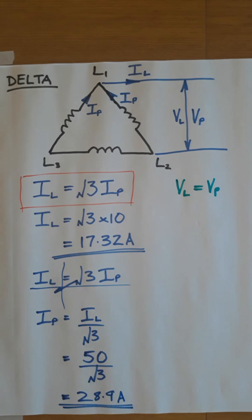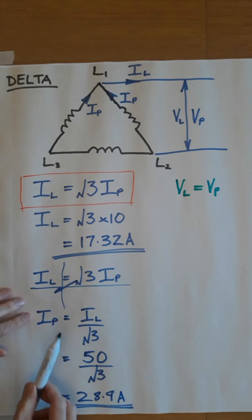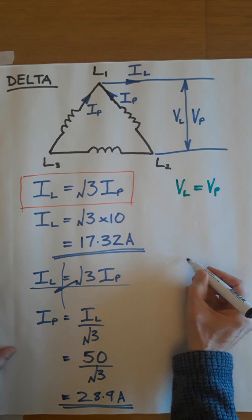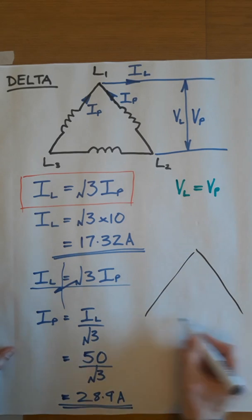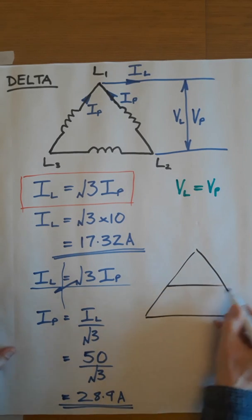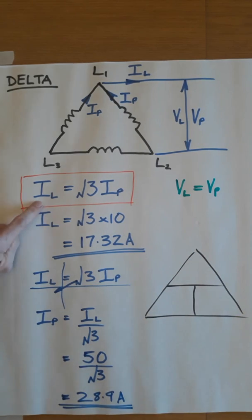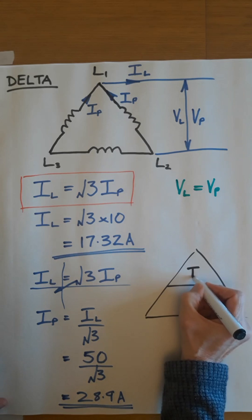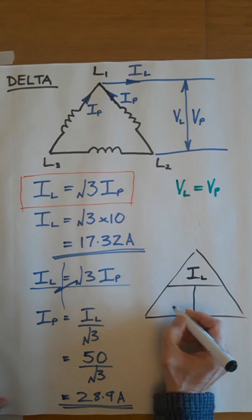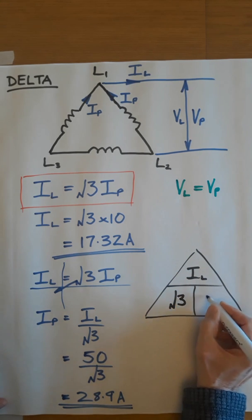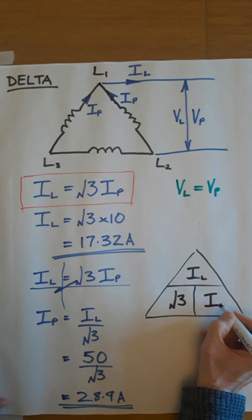And finally, if you have difficulty with this transposition, then once again a triangle may help you. I try to discourage triangles. I'd rather you remember one formula and know how to transpose. But not everybody can do that. So IL equals root 3 times IP.